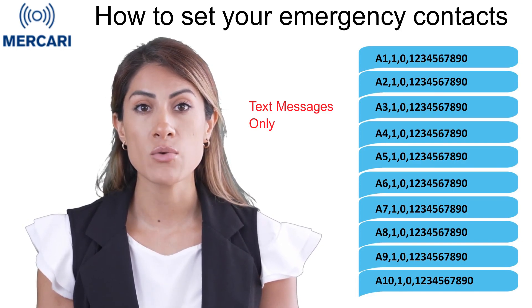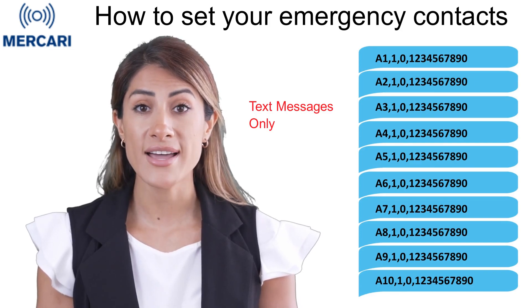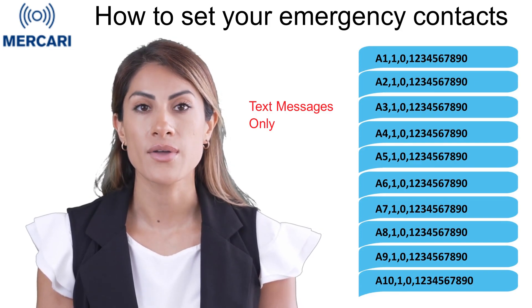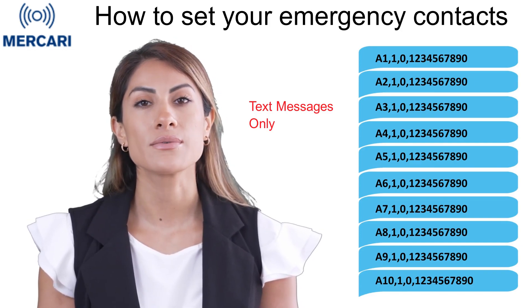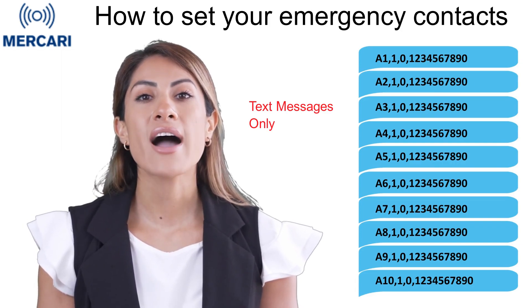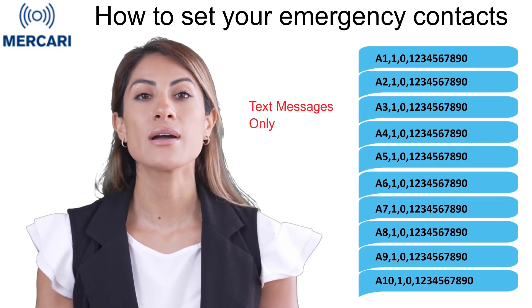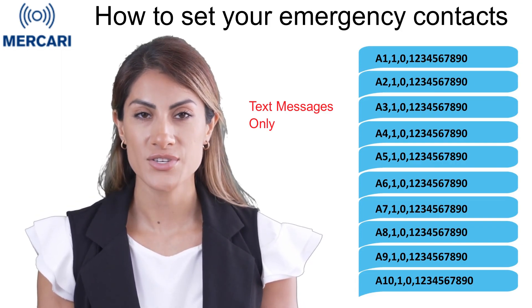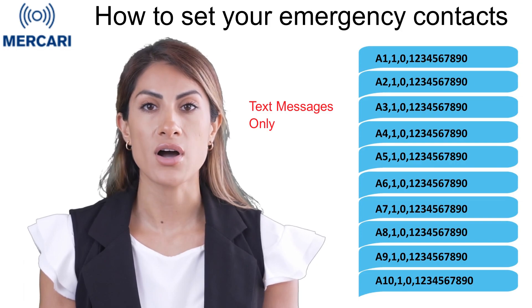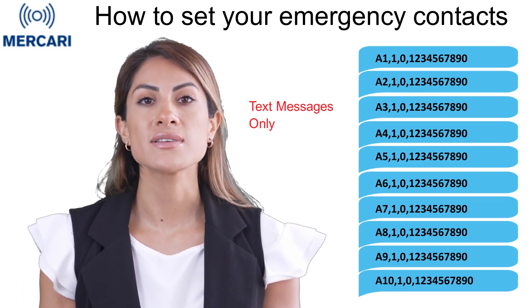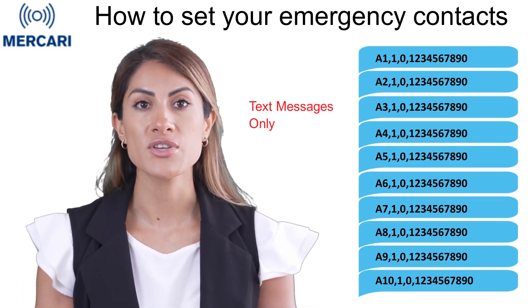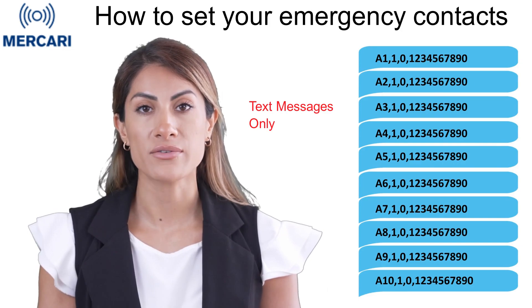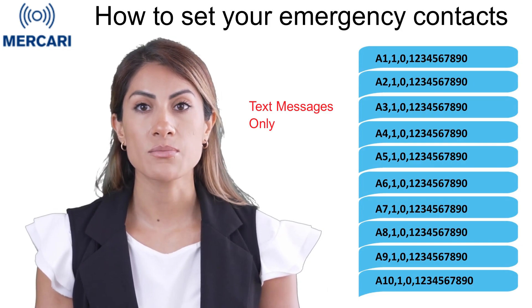If we use the A1 example, you would send the SMS code as A1,1,0, followed by the phone number of your highest priority number. The zero in the code indicates that the calling function is disabled for that emergency contact. You would continue to program your priority list until complete.